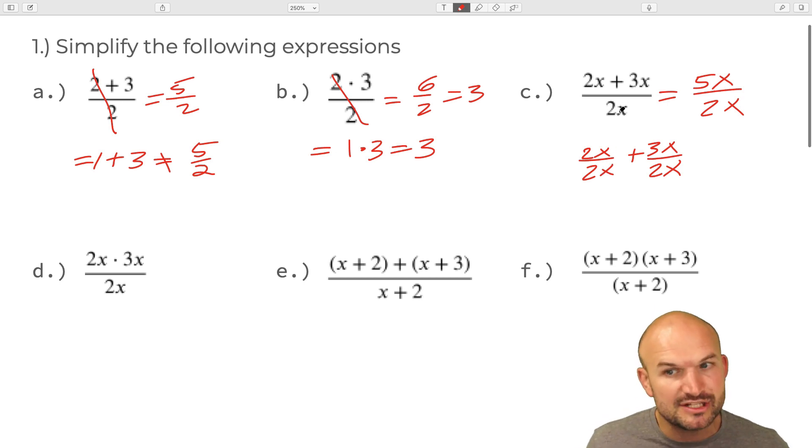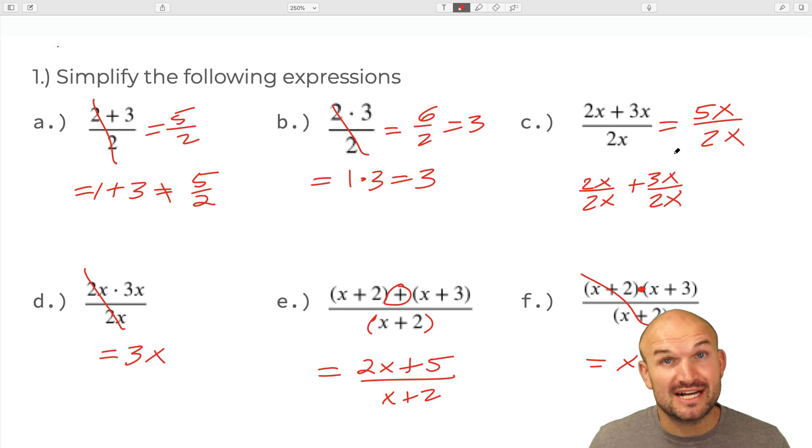So you're distributing this 2x to both of those terms. That's how we're getting 5x over 2x, which again, remember, these are now separated by multiplication. So actually, these x's can divide out, leaving us with a final answer of 5 halves.